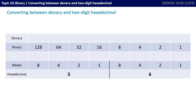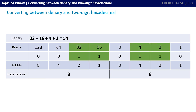Let's do one more: convert the hexadecimal number 36 — that's 3, 6, not 36 — into binary and denary. Pause the video, take it through binary, and then unpause and see if you got the same answer. We've taken the 3 and written that out as a 1 in the 2 column and a 1 in the 1 column. On the right-hand nibble we've got 6, so that's a 1 in the 4 column and a 1 in the 2 column. Adding the columns with 1s in: 32 plus 16 plus 4 plus 2 equals 54.